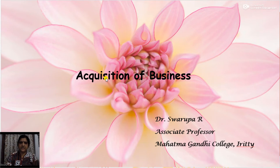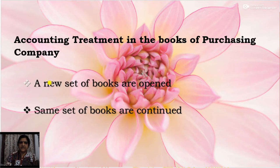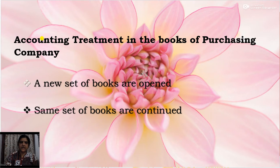Regarding the accounting treatment, there are mainly two methods. One is that a new set of books are opened, or the same set of books can be continued. So usually there are two methods by which the purchasing company deals with the accounts of the business acquired. Today we will discuss the second one — that is, the same set of books are continued.